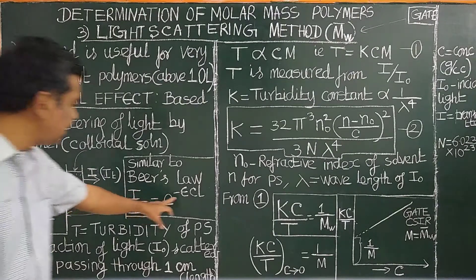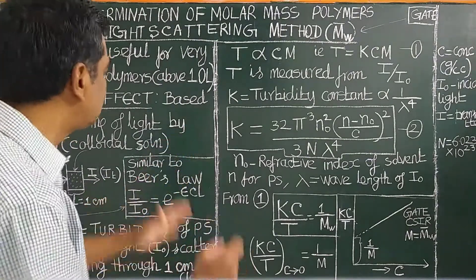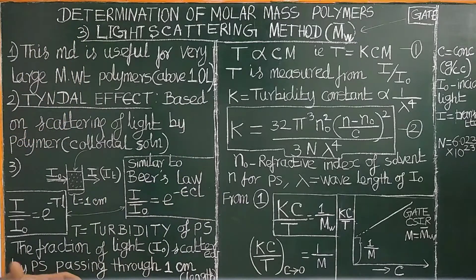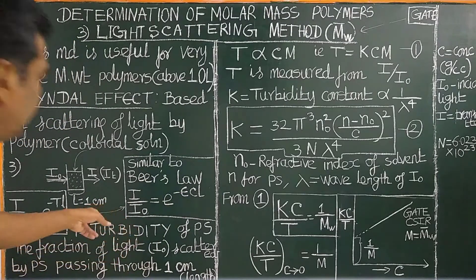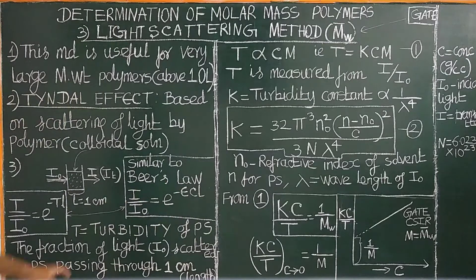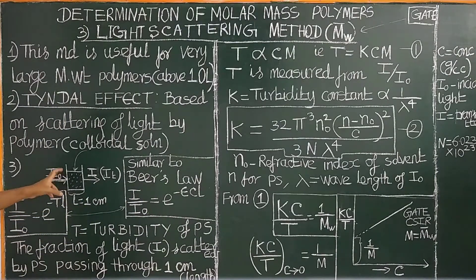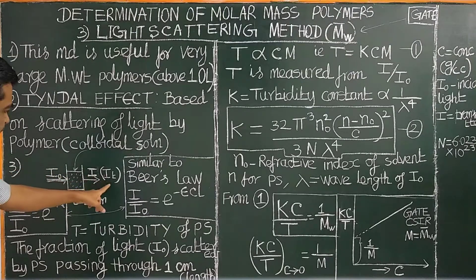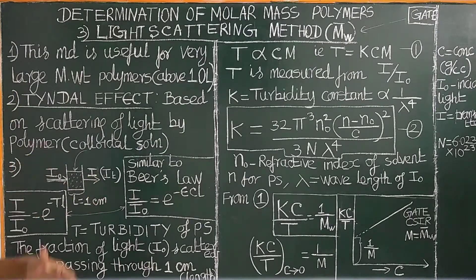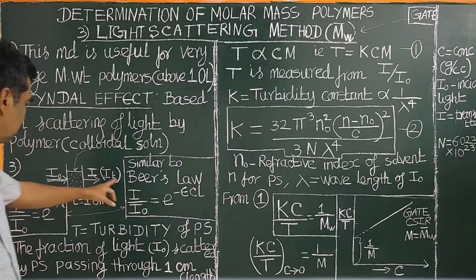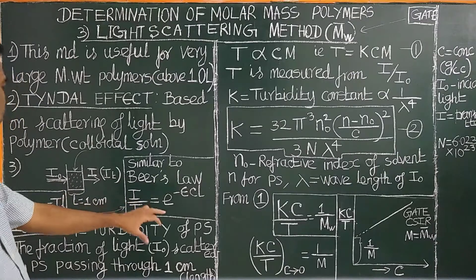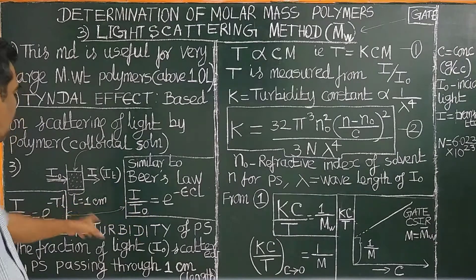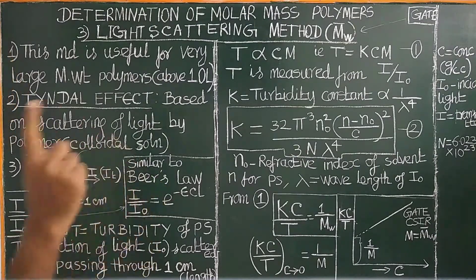This equation is very similar to Beer-Lambert's law, which we have studied earlier. Here, i₀ is the intensity of the incident light, and i is the intensity of the transmitted light passing through the polymer solution of path length 1 centimeter.